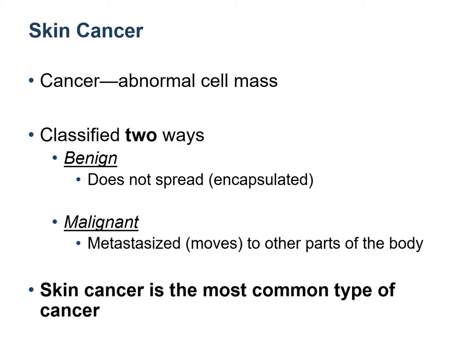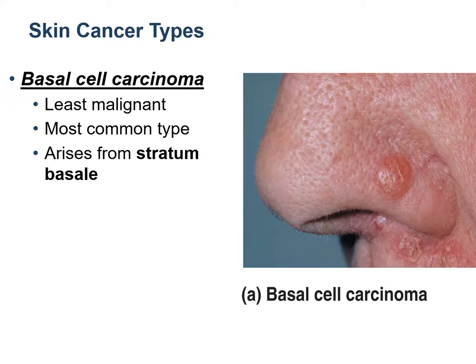Skin cancer is the most common type of cancer found in human beings. There are two types: it is called benign if the cancer has not spread and is still localized, and it is known as malignant if the cancer has metastasized — that means it has moved to other parts of the body. There are three types of skin cancer. The first is basal cell carcinoma, which starts in the stratum basale and is the most common but least malignant type.